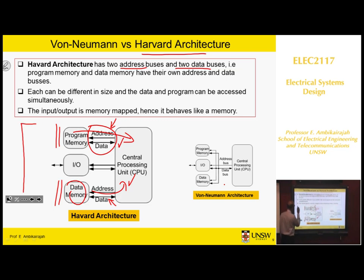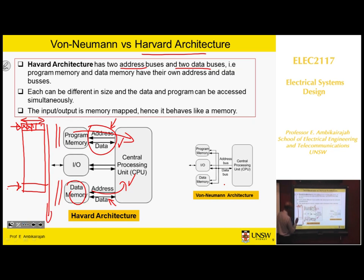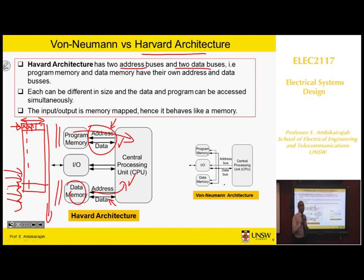The memory is structured so that data — for example, 8-bit data — is stored at each address location, and there can be a very large number of locations, perhaps one million positions. If you say the memory size is 12K, that means 12,000 address lines. 12K by 8 means the data width is 8-bit. Most modern structures use Harvard architecture because it is faster, more efficient, and supports parallel processing.